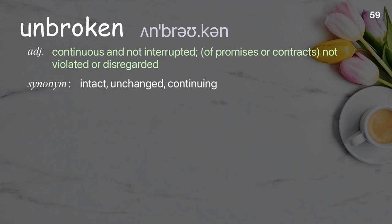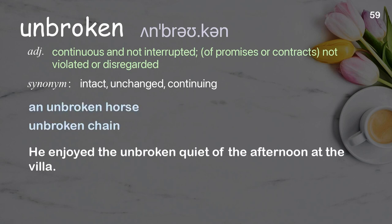Unbroken: continuous and not interrupted; of promises or contracts, not violated or disregarded. Examples: an unbroken horse, unbroken chain. He enjoyed the unbroken quiet of the afternoon at the villa.